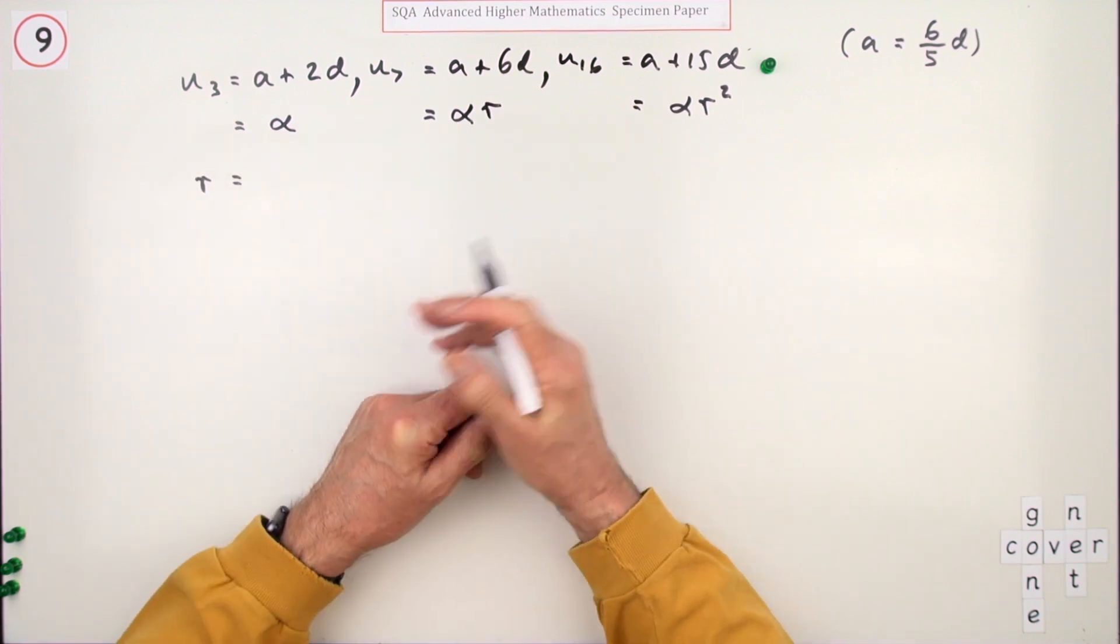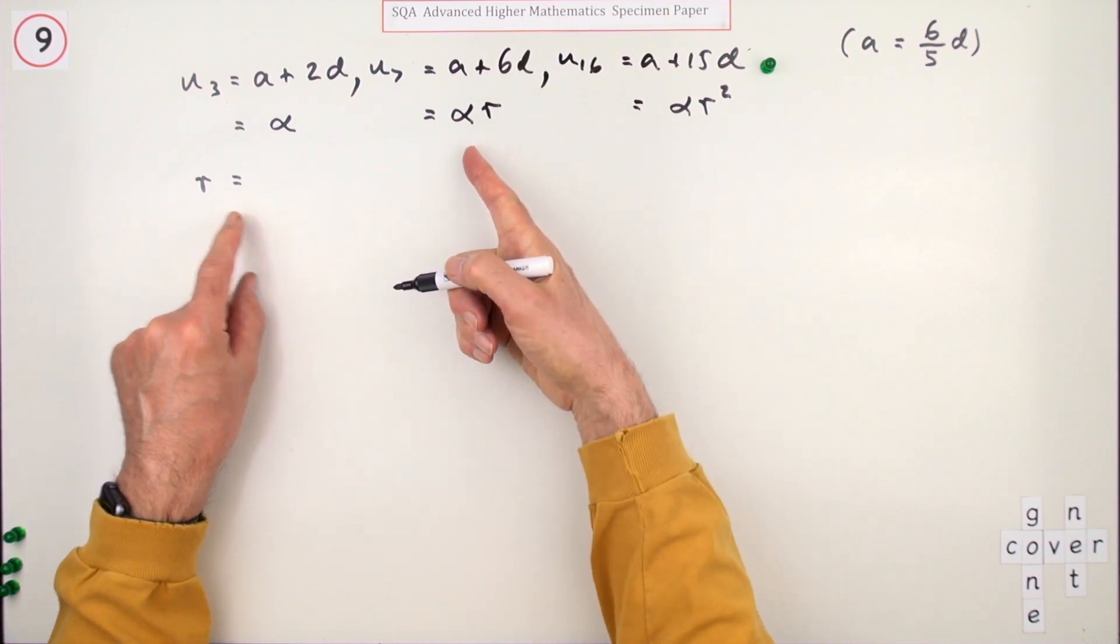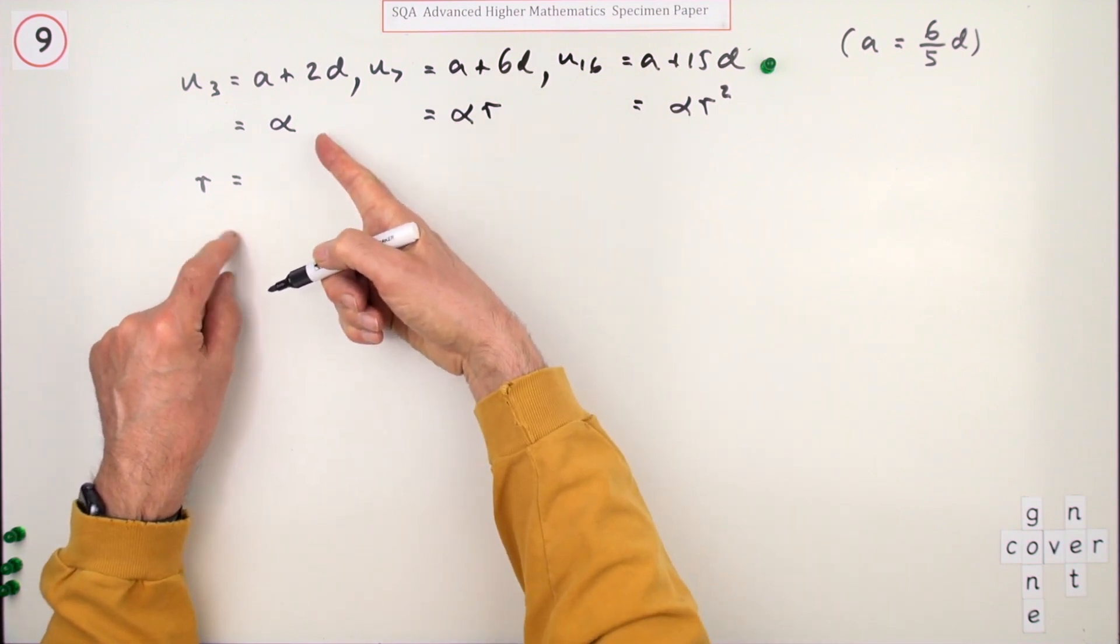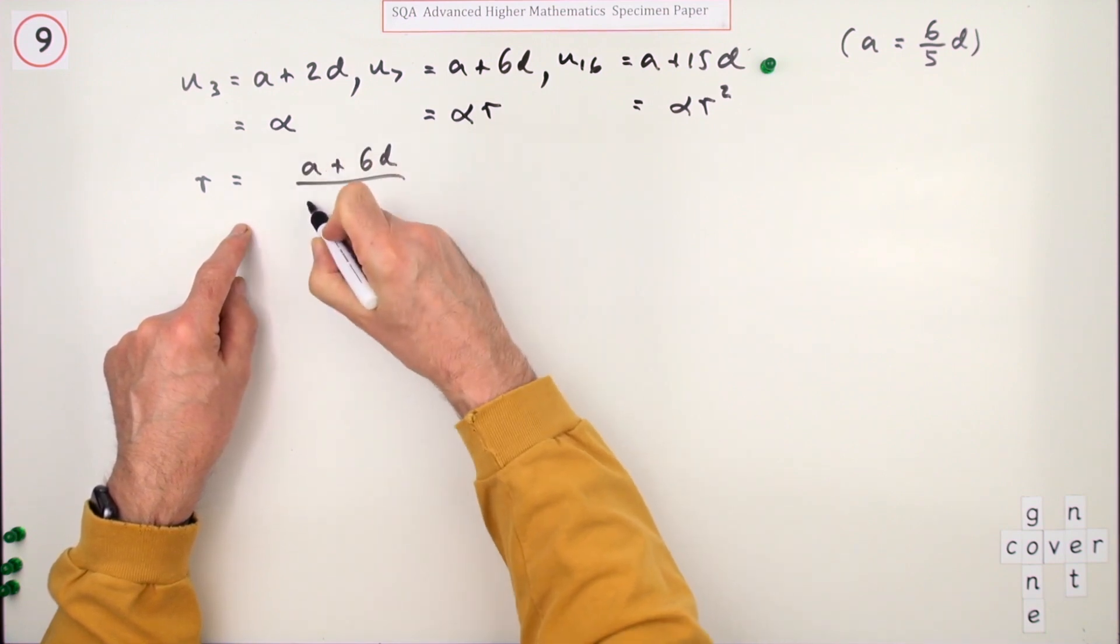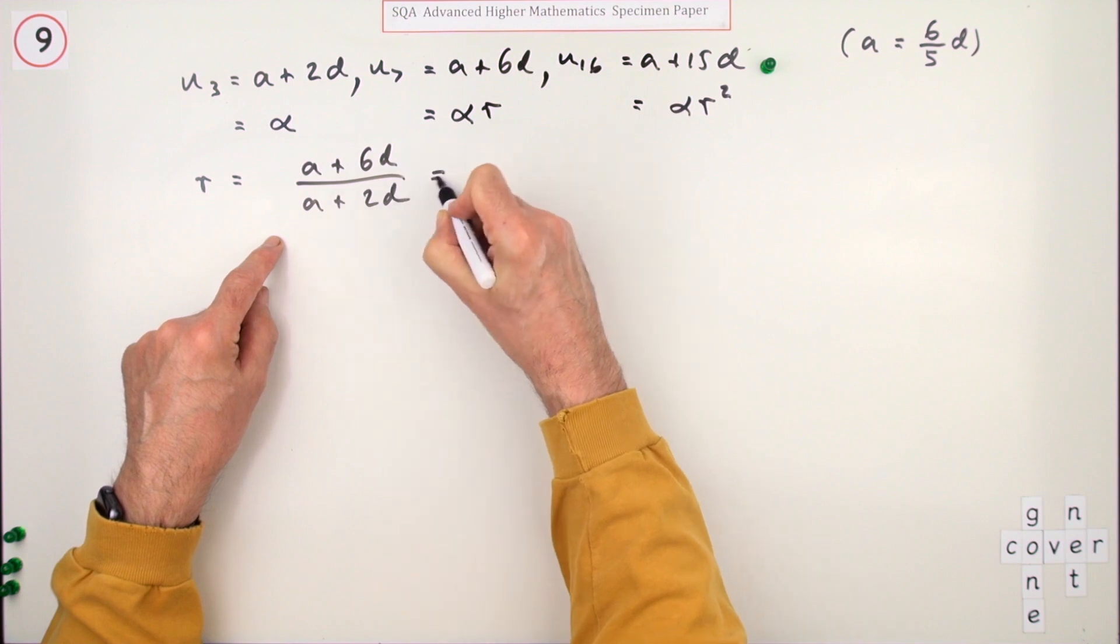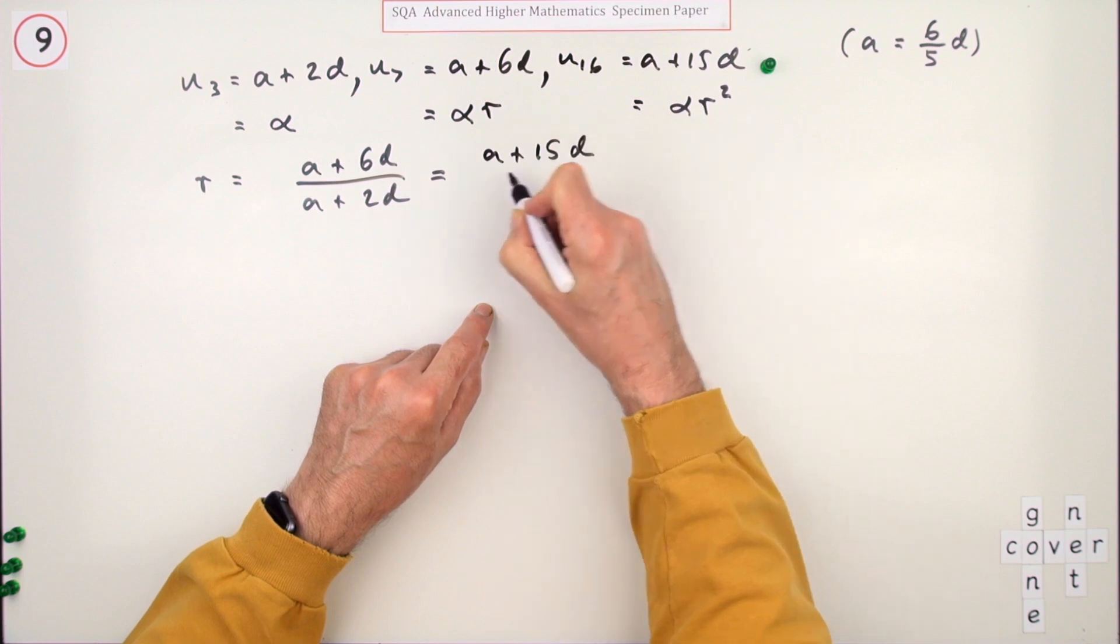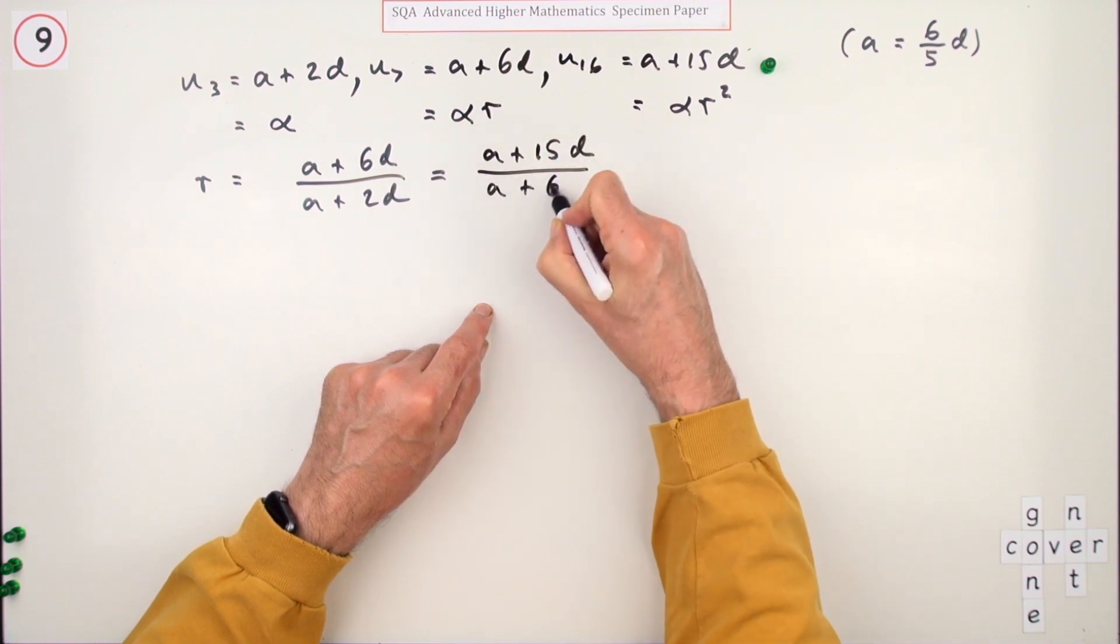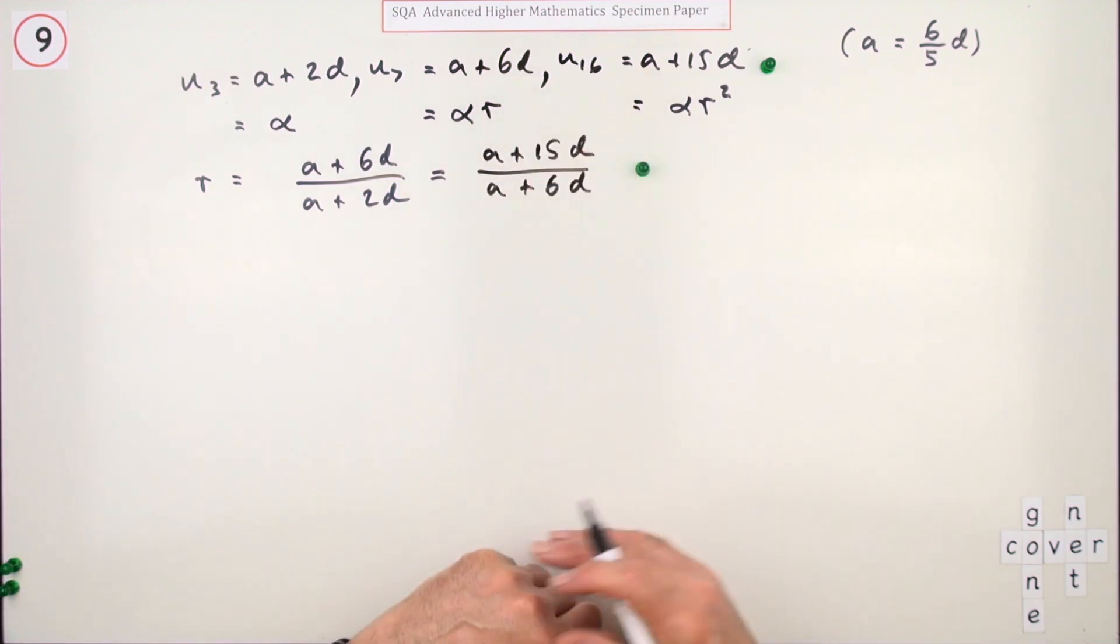I'll get r from this at the end of the question. R will be this one divided by that one, which is a plus 6d over a plus 2d. Or I could get r from dividing these, which is a plus 15d over a plus 6d. Doing that is worth a mark.